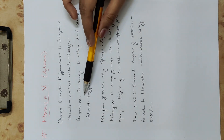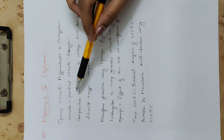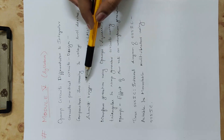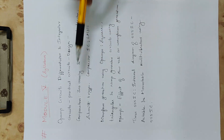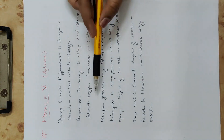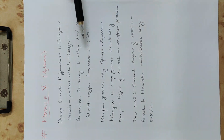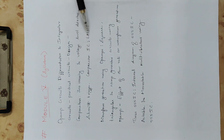The next topic is comparators. Comparators are used as zero crossing detectors and voltage level detectors. Next is the Schmitt trigger and the comparator IC LM311.